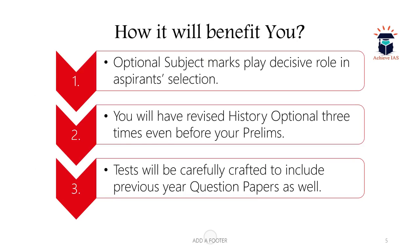The optional subject carries 500 marks, which is a large number and plays a decisive role in a candidate's selection — whether they make the interview list and which category they get. So the optional subject decides your fortunes and requires serious attention. You will also have revised the history optional syllabus three times even before your prelims, as the timetable is framed so that you complete the first revision by September, then the second, and then the third. At the time of the exam you will not have to worry about the syllabus.